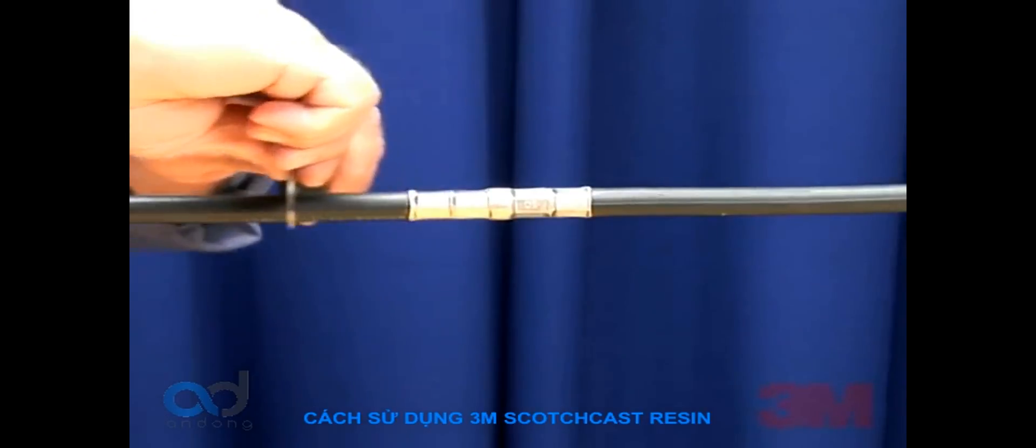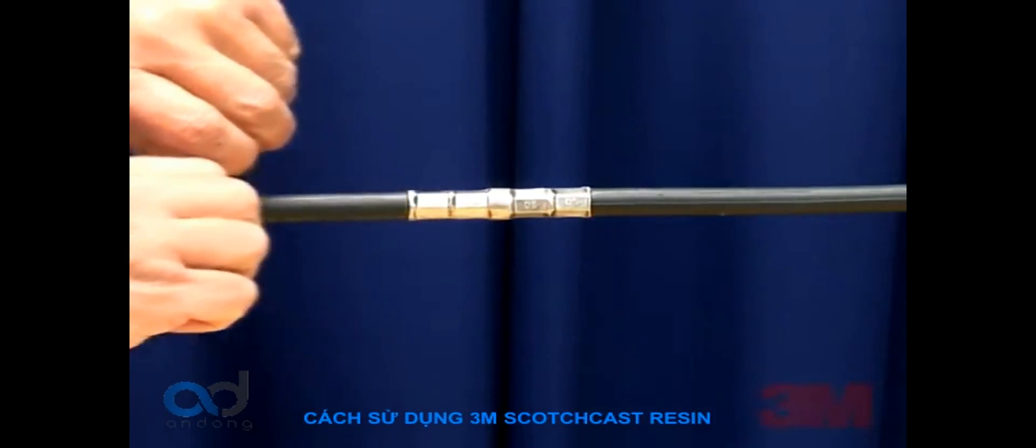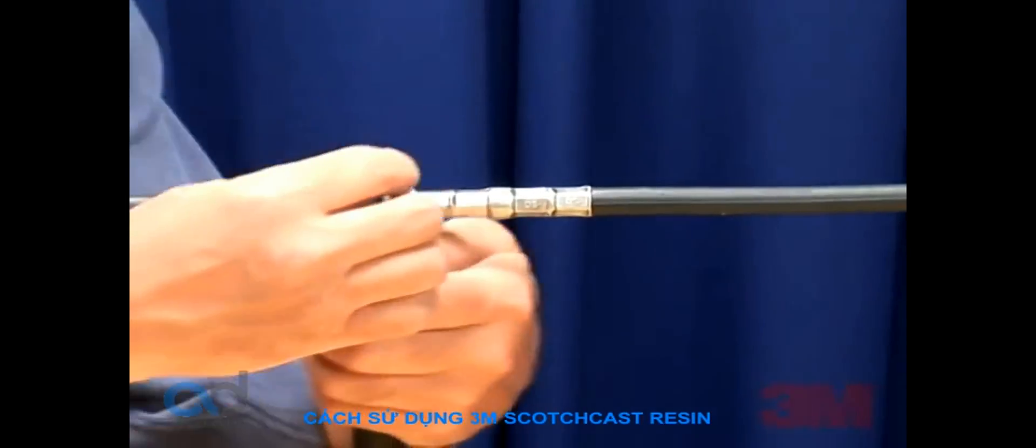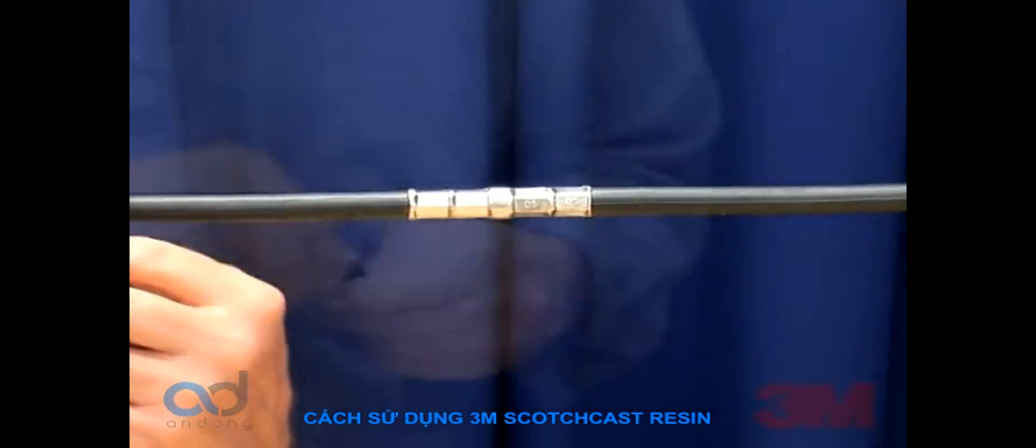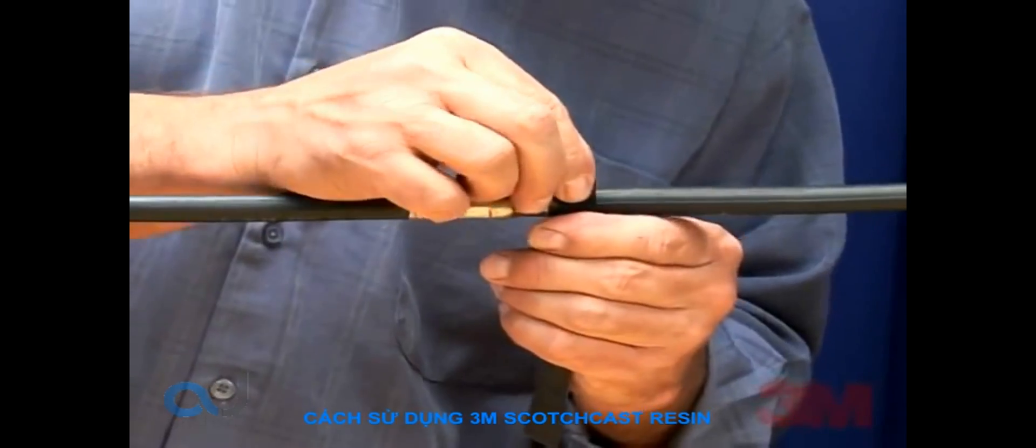Step 2: Make the connection according to instructions for the connector being used. The mold will accept crimped type connectors and split solder sleeve connectors. Then tape over the connector area.